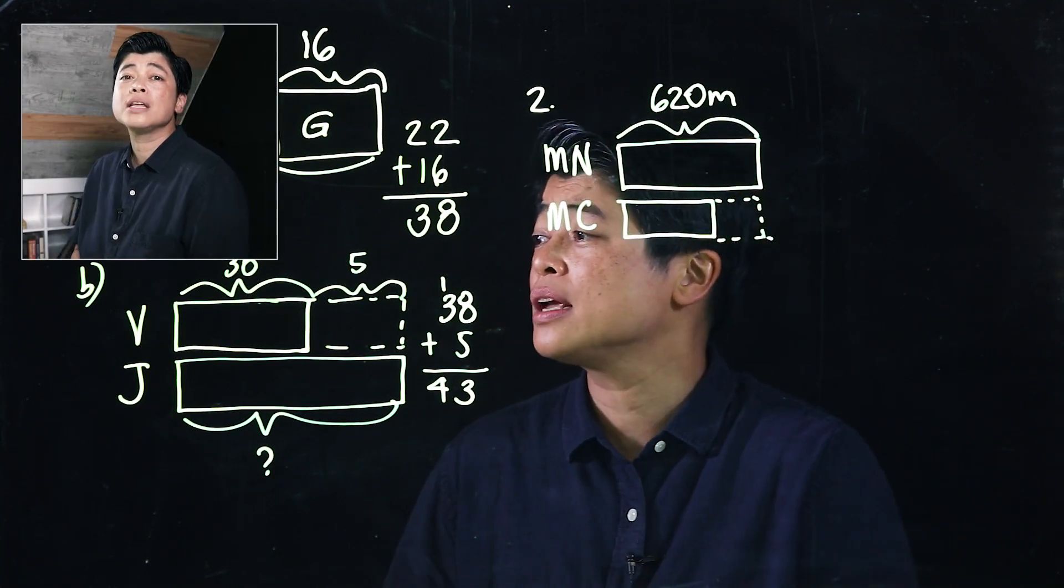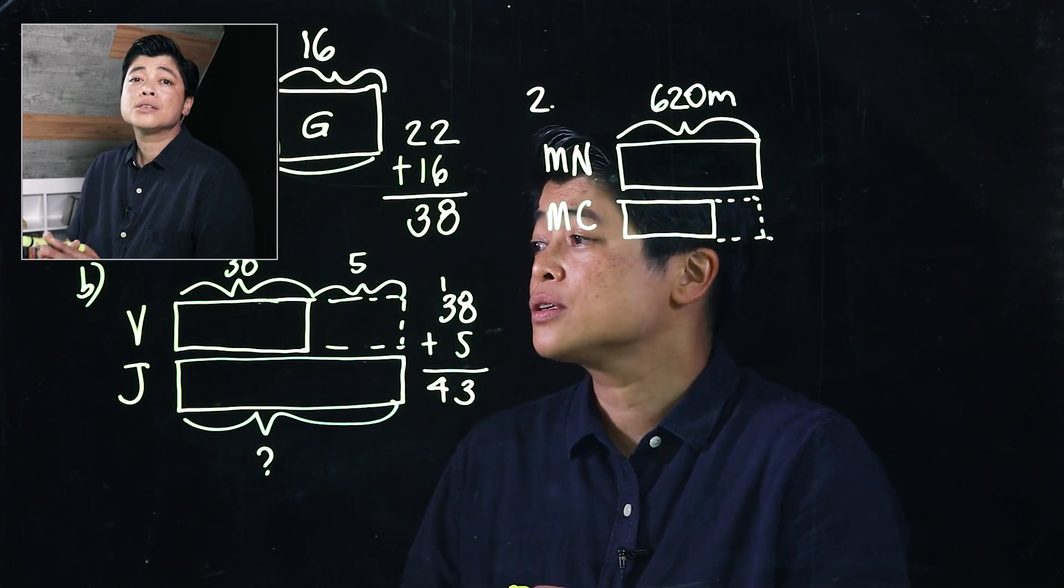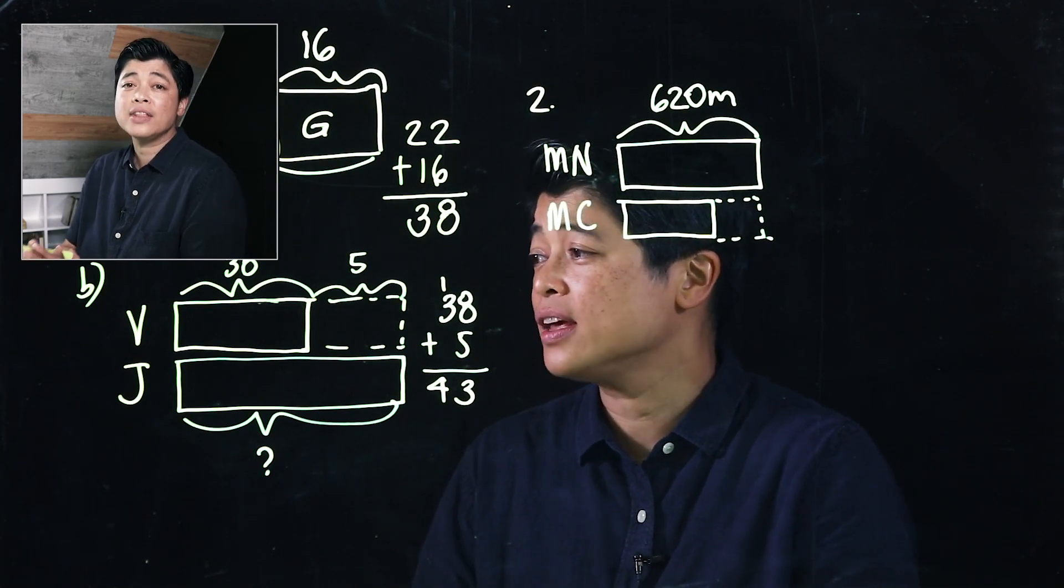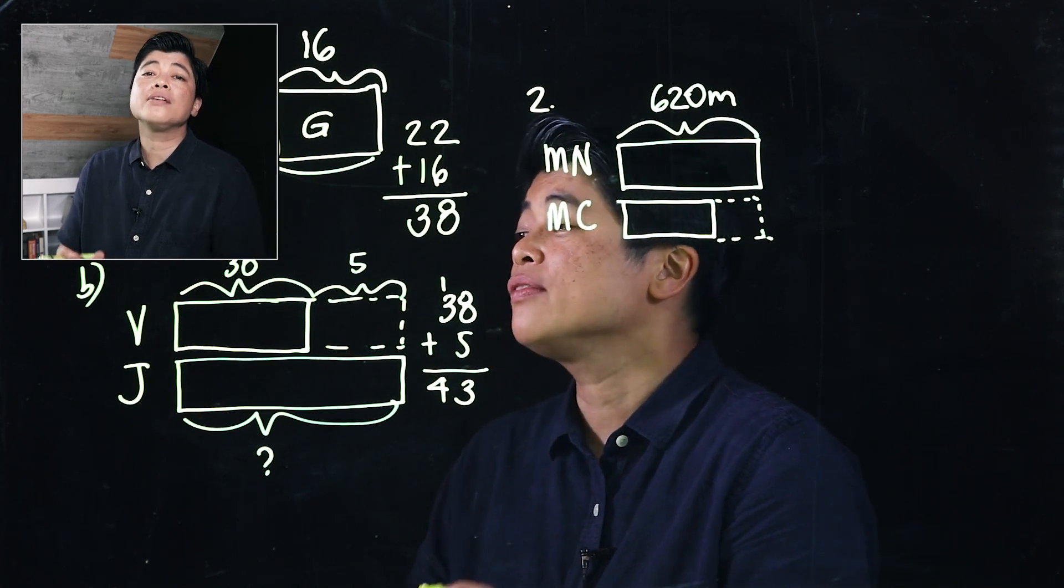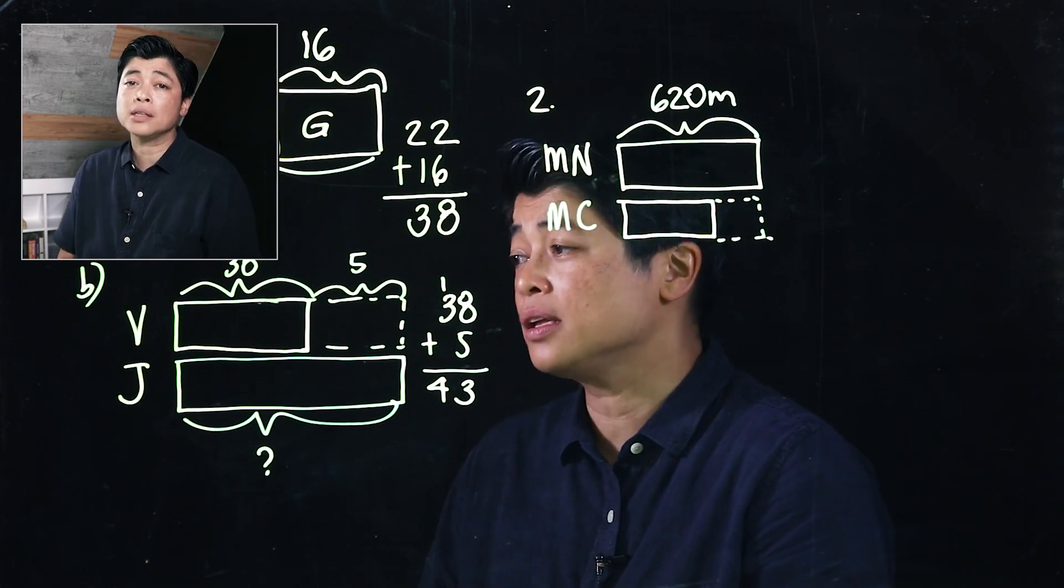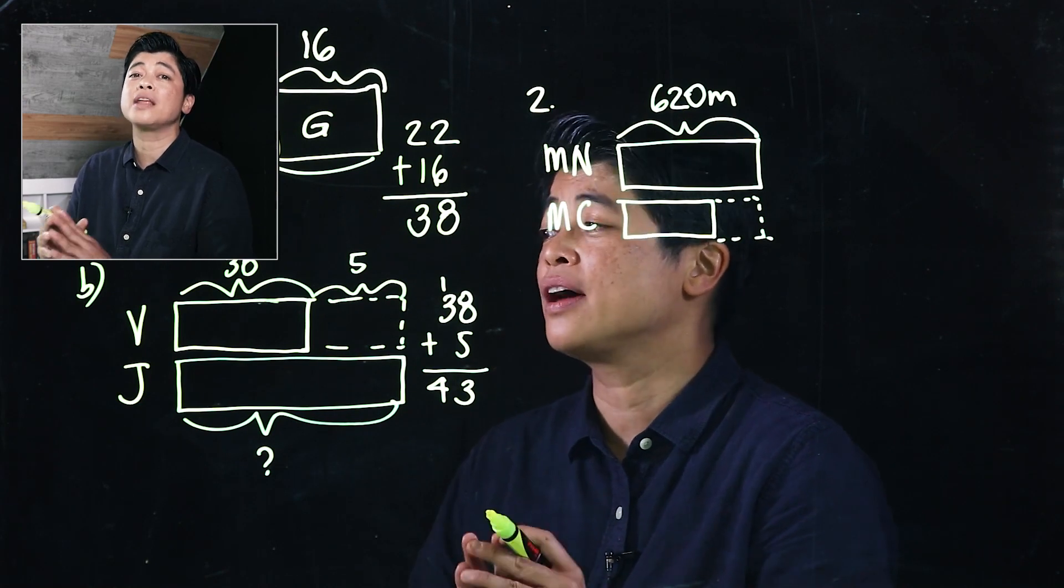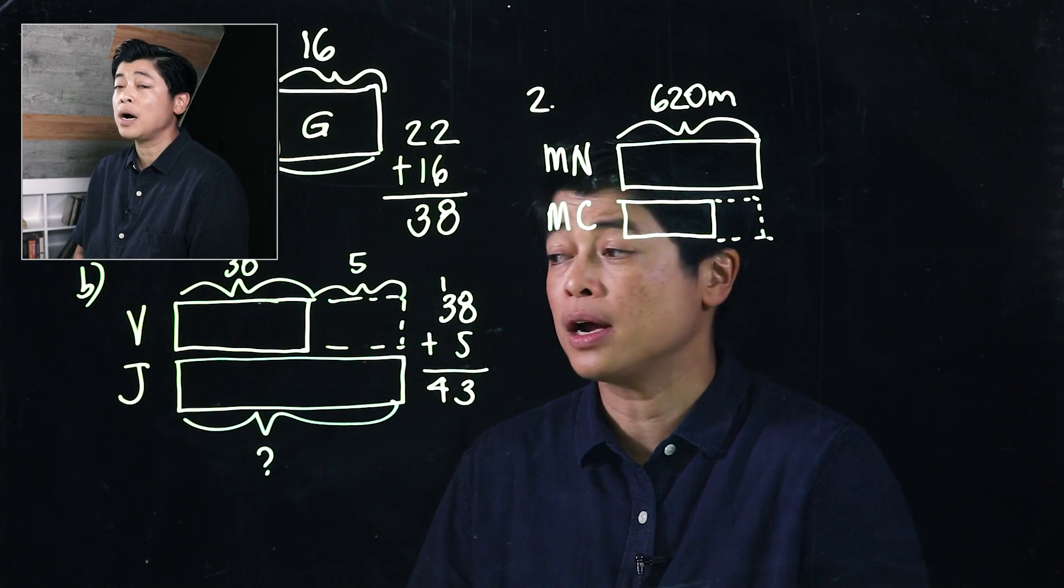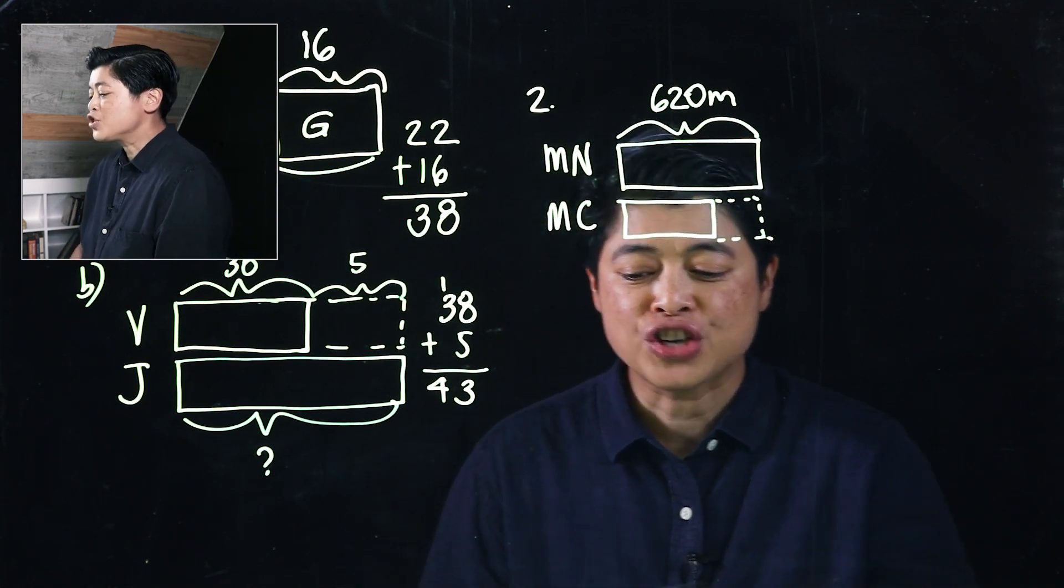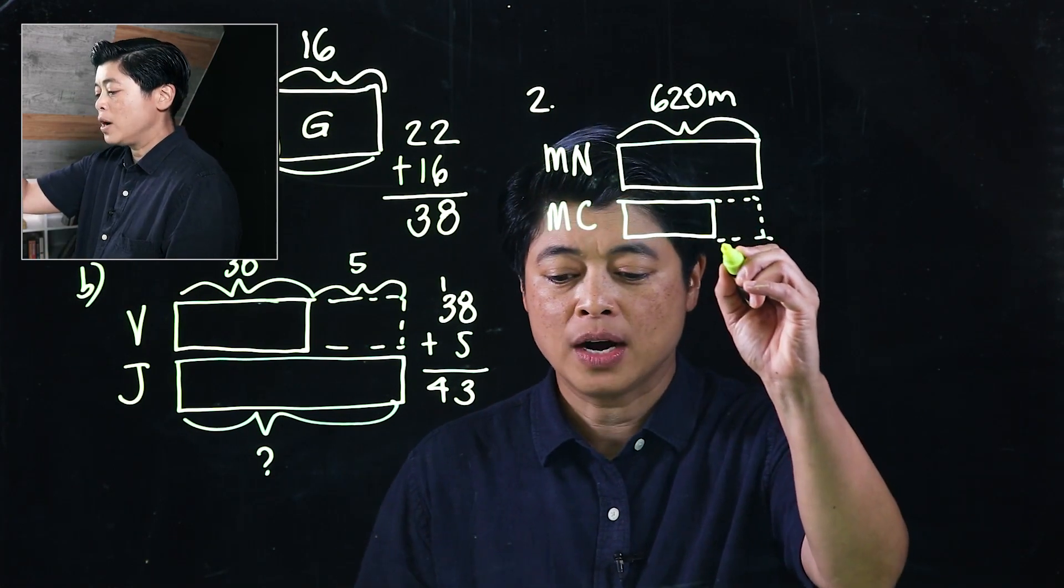We need to teach our kids to be consistent so that they will be confident. So if they have the given bar model, it's okay to follow the bar model. But if they had to come up with a bar model themselves, then it's best to train them that the first character is on top and the second character is on the bottom.